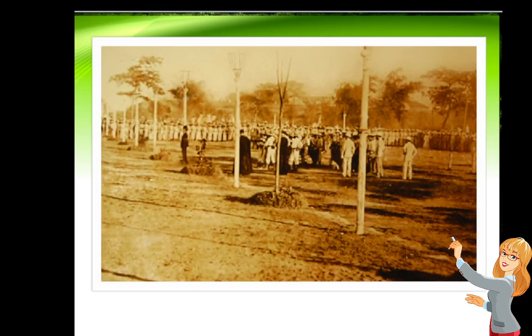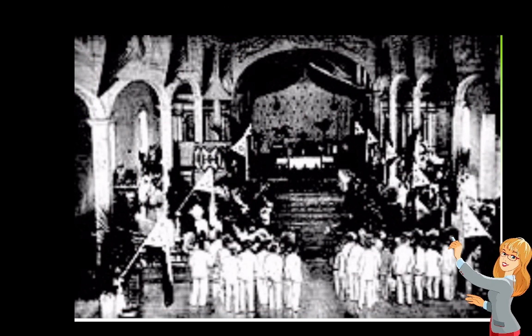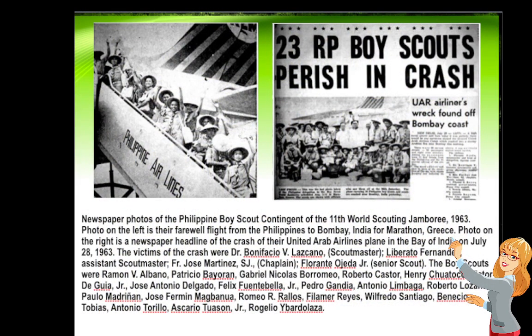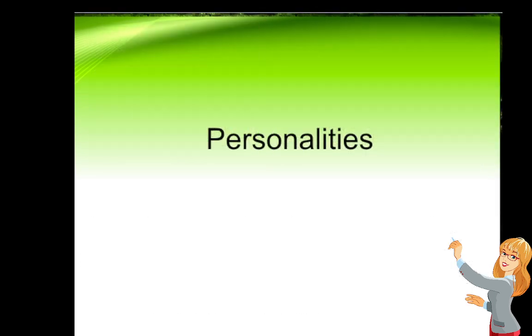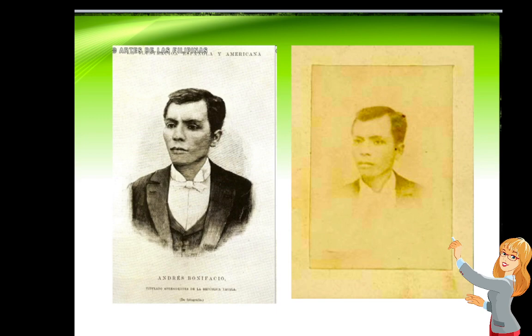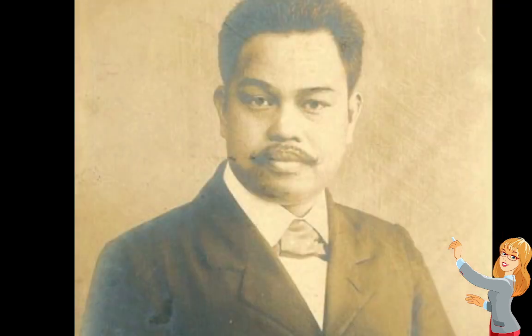Events captured in photographs include the execution of Rizal, Katipuneros — including a photo taken at Barasoain Church — and scenes from World War II. There is also a newspaper carrying the news about a Philippine Airlines crash involving Boy Scouts. We also have two surviving pictures of Andres Bonifacio, which are the legitimate known photos of him.